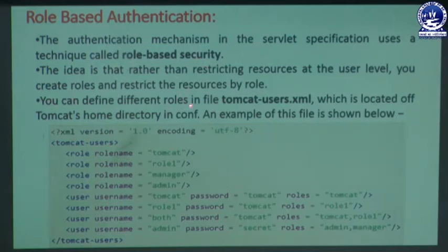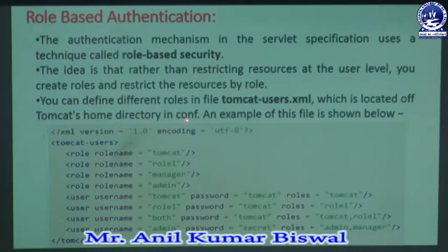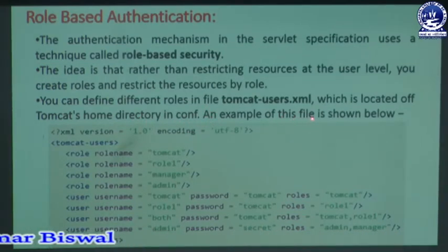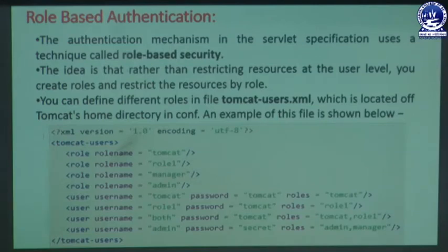You can define different roles in the file tomcat-users.xml, which is located in Tomcat's home directory in the configuration file. An example of this file is shown below. First of all we design one XML format — XML version 1.0, encoding UTF-8. We take the help of two tags known as tomcat-users, because we are using the Apache Tomcat web server.